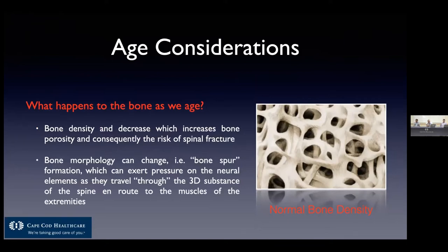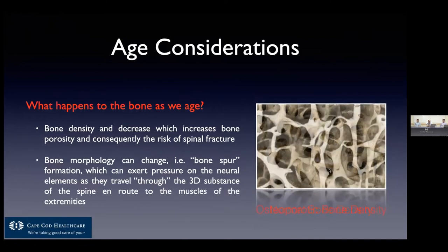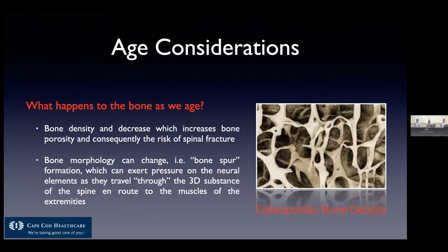It's normal for bone density to decrease as we age — the porosity of the bone increases, and consequently your risk for a spinal fracture goes up. You can see what normal bone density looks like versus a patient with osteoporosis — the scaffolding of the skeleton is significantly reduced. The ability of those bones to support the spine and protect the nerves is reduced, and the incidence of fracture unfortunately goes up.